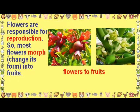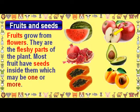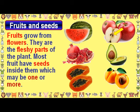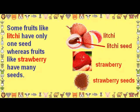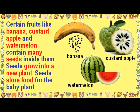Flowers are responsible for reproduction, so most flowers change their form into fruits. Fruits and seeds: Fruits grow from flowers and are the fleshy parts of the plant. Most fruits have seeds inside them, which may be one or more. Some fruits like lychee have only one seed, whereas fruits like strawberry have many seeds. Certain fruits like banana, custard apple, and watermelon contain many seeds inside them. Seeds store food for the baby plant.